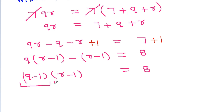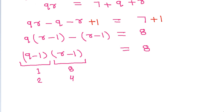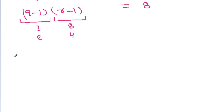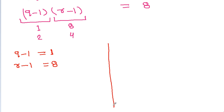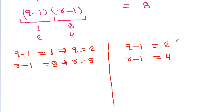So q minus 1 and r minus 1 can be 1 and 8, or 2 and 4. Since the equation is symmetric, 4 and 2, and 8 and 1 will be the same. Case 1: q minus 1 equals 1 and r minus 1 equals 8, giving q equals 2 and r equals 9. But r equals 9 is not possible because 9 is not prime. Case 2: q minus 1 equals 2 and r minus 1 equals 4, giving q equals 3 and r equals 5.